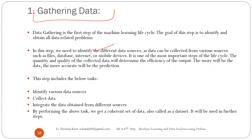In this step, we identify different data sources from where we will get the data. Maybe from online resources where data is already available, or sometimes the data is not available and you have to create it on your own. Data can be collected from various sources such as files, databases, the internet, or even from mobile devices. The quantity and quality of collected data determine the efficiency of the output. The more the data and the more correct the data, the better the prediction.